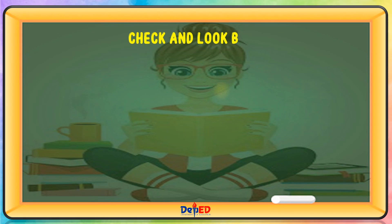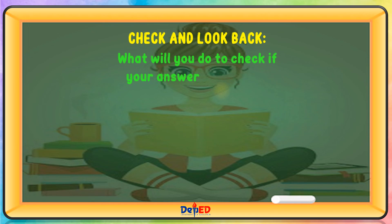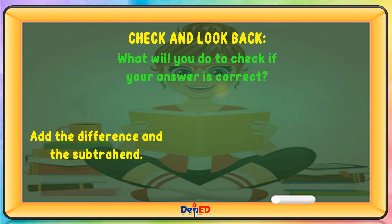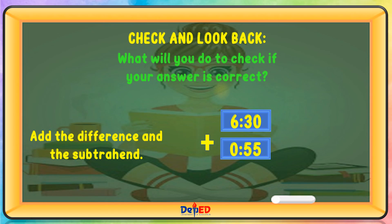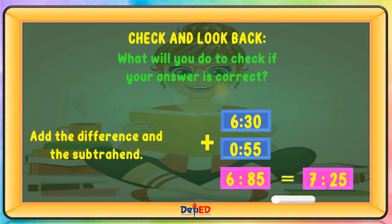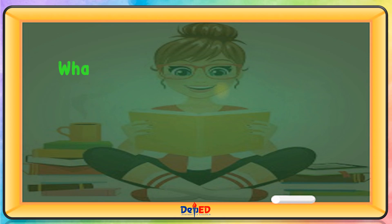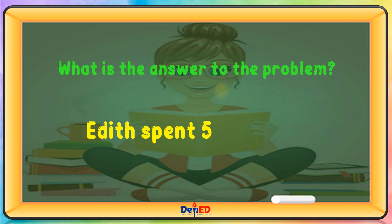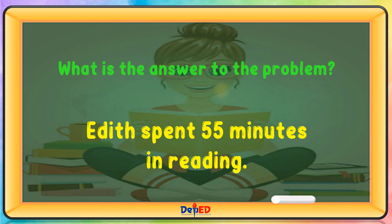Check and look back. What will you do to check if your answer is correct? You add the difference and the subtrahend: 6:30 plus 55 minutes equals 6:85, and 6:85 is equal to 7:25. What is the answer to the problem? Edith spent 55 minutes reading.